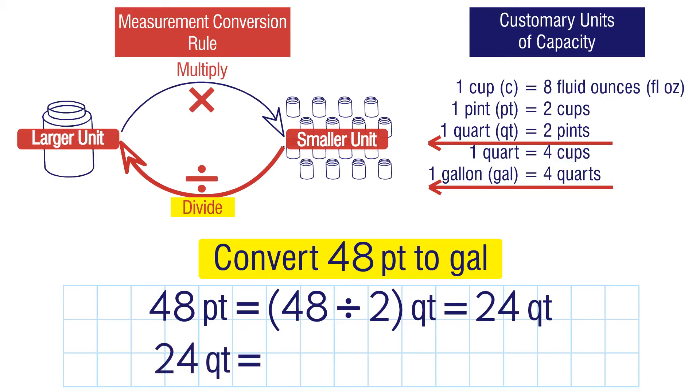Now we need to convert the 24 quarts into gallons. We're going from small units to large units, so we need to divide. One gallon has four quarts, so we divide 24 by 4 to get 6 gallons. So 48 pints is equal to 6 gallons.